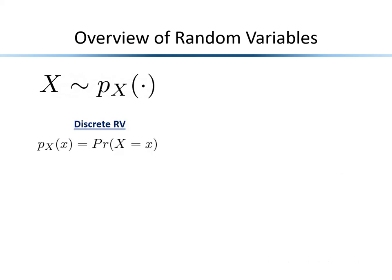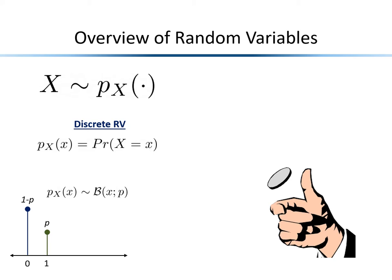Random variables come in two flavors. The first category is discrete random variables, where X can take on one of a finite set of values, and the probability distribution equals the probability of observing each of those outcomes. The simplest example is a Bernoulli, which can assume values zero or one with some probability of each occurring. Conceptually, we can think of a Bernoulli random variable as tossing a coin — there are only two outcomes, heads or tails, which we assign to numerical values.